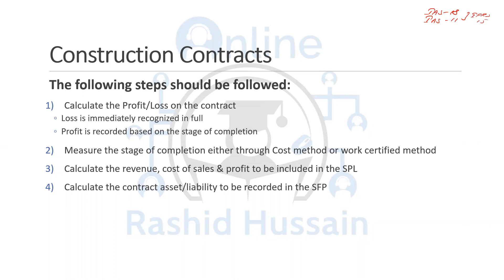The construction contract is a very important topic within IFRS 15. The accounting issue related to construction contracts is that these are long-term contracts — contracts that last more than one year. For example, a company making an Olympic stadium may take three to four years. Similarly, building a bridge, a dam, or constructing a football ground.